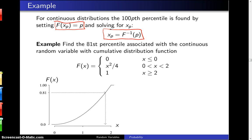So for example, to find the 81st percentile associated with the continuous random variable with cumulative distribution function F(x) equals: zero for x less than or equal to zero, x squared over four for x between zero and two, and one for x greater than or equal to two.